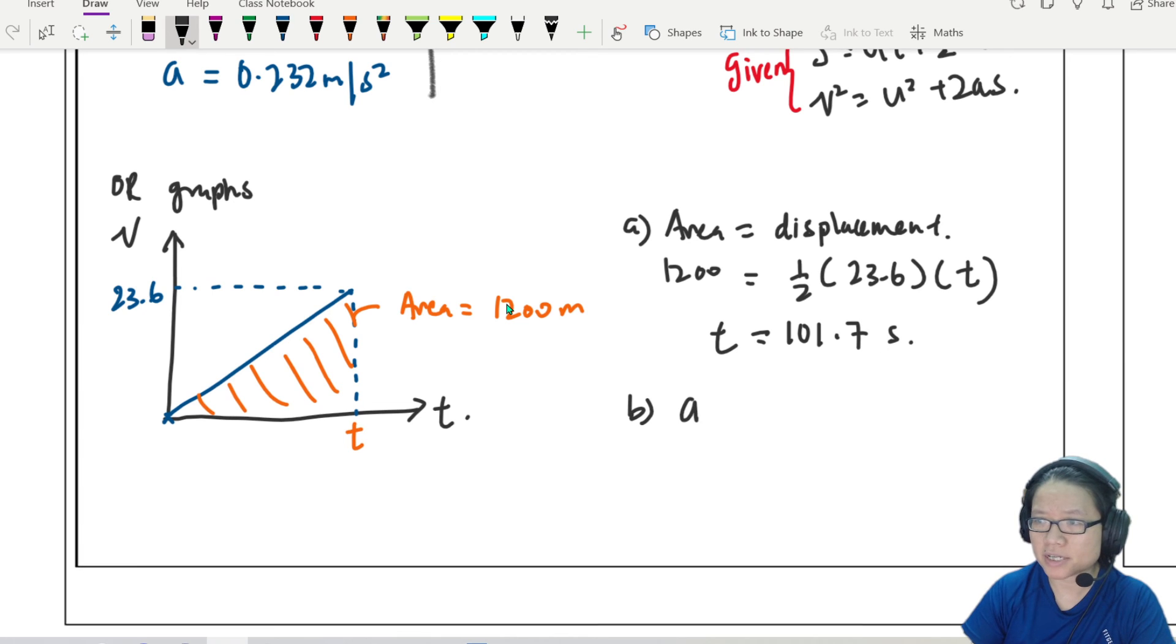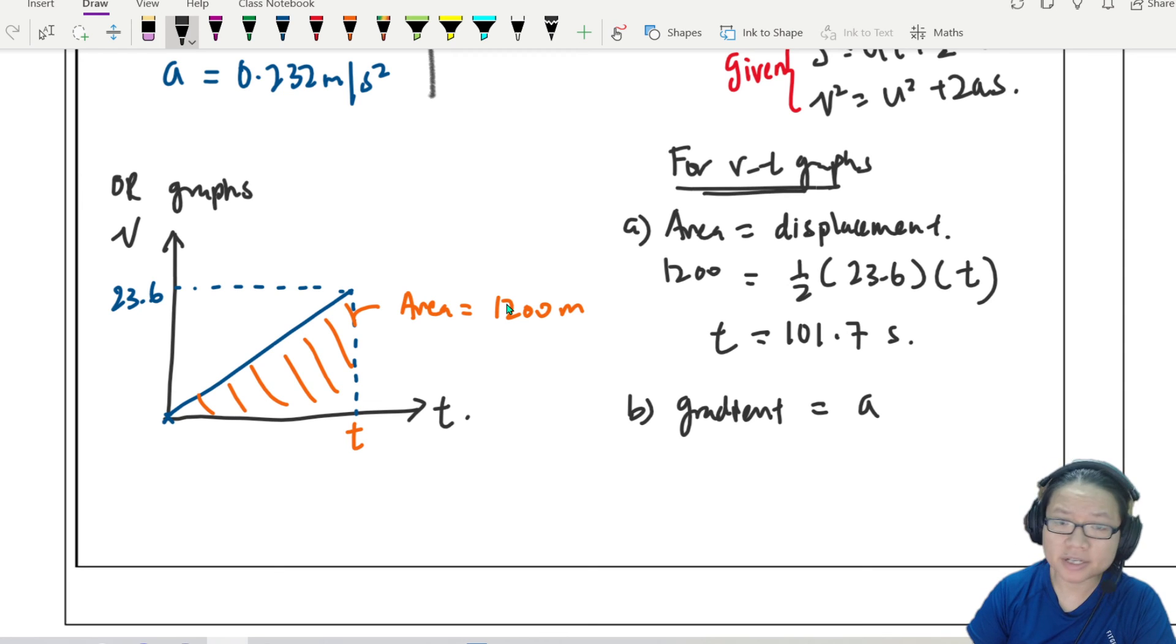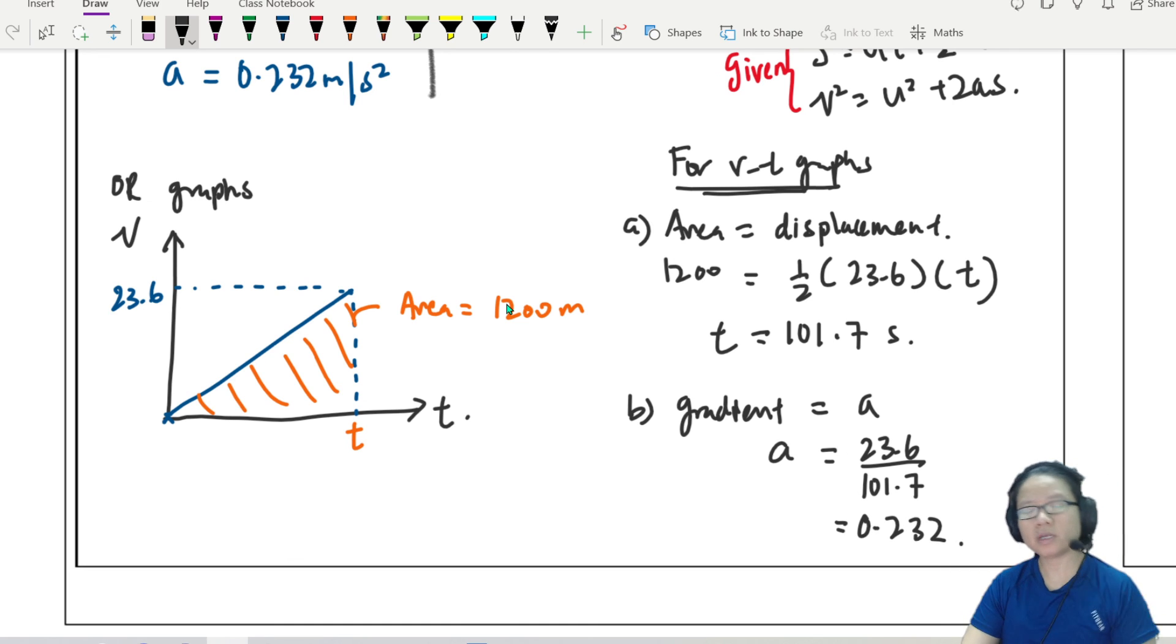B. Acceleration. Gradient is equal to acceleration. Gradient of VT. Maybe I'll write a title here. For VT graphs. So, gradient is equal to A. From here, if I want to find the gradient, I'll take 23.6, the height, divided by the 101.7. So, 23.6 divided by 101.7 will be equal to 0.232.